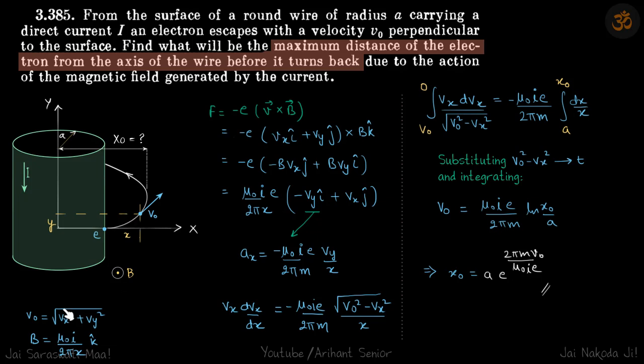Now two things. One is the magnetic field cannot make the velocity go up or down, so velocity will remain constant. So at any location x and y, its total magnitude of the velocity remains v0.